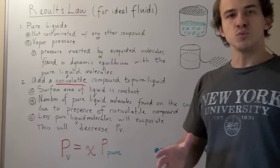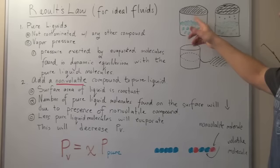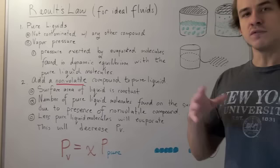Today we're going to talk about Raoult's Law for ideal fluids. So what is a pure liquid? A pure liquid is simply a liquid that is not contaminated by any other compound or molecule. For example, suppose we have a closed system, a closed container, and inside this container we have pure water. What that simply means is that the only types of molecules found within our system are water molecules.